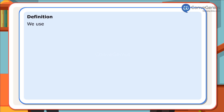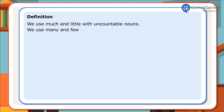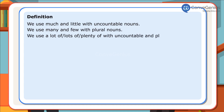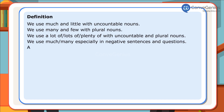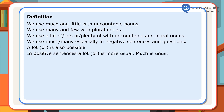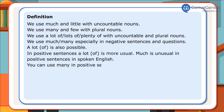Definition: We use much and little with uncountable nouns. We use many and few with plural nouns. We use a lot of, lots of, and plenty of with uncountable and plural nouns. We use much and many especially in negative sentences and questions. A lot of is also possible in positive sentences — a lot of is more usual, and much is unusual in positive sentences.